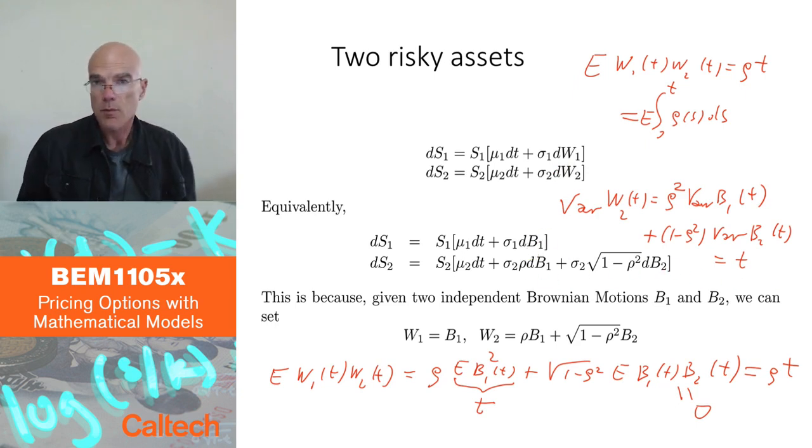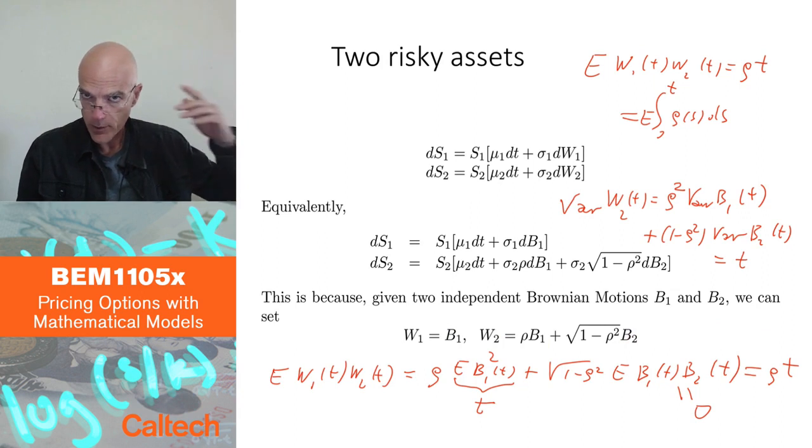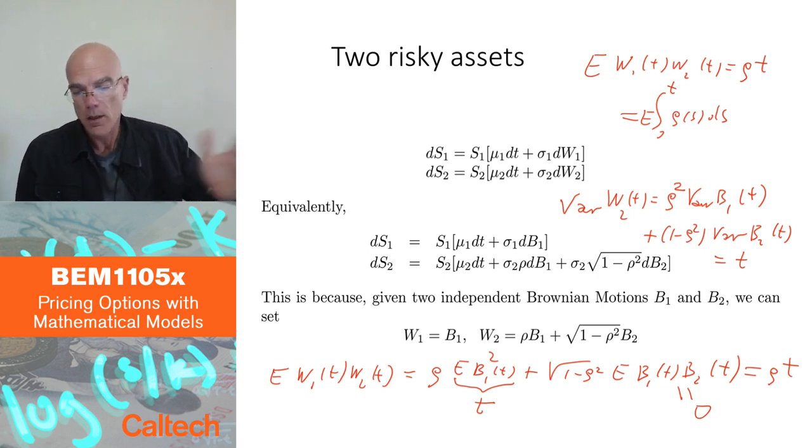And you can do this for more than two stocks. This is what we are doing here really, is an orthogonal transformation, applying an orthogonal matrix on b1 and b2 to get w1 and w2. You can do higher dimensional orthogonal matrix applied to independent Brownian motions to get correlated Brownian motions with a given correlation. I'm not going to do that in this course, but it's basically the same idea. This is just a special case in dimension two. So that's the model.